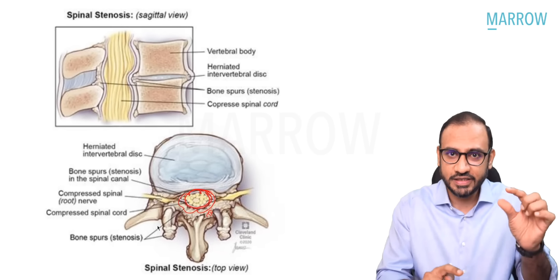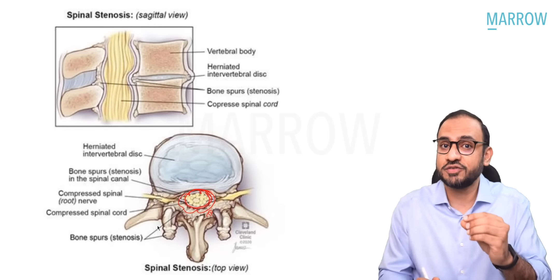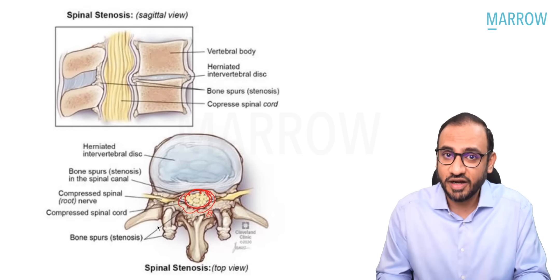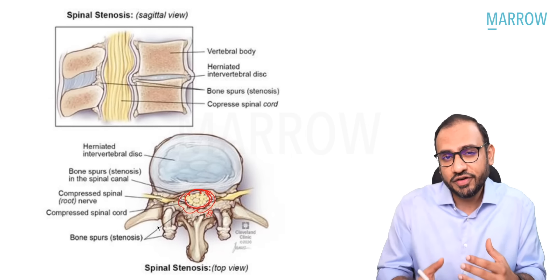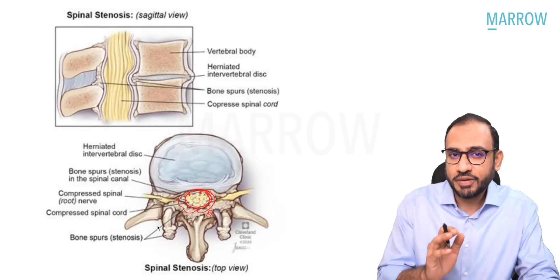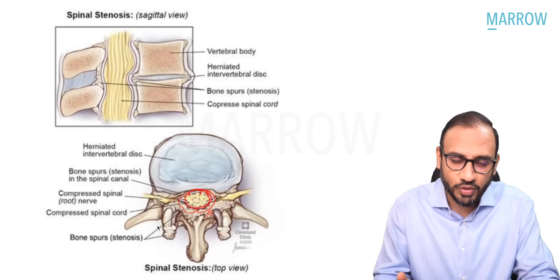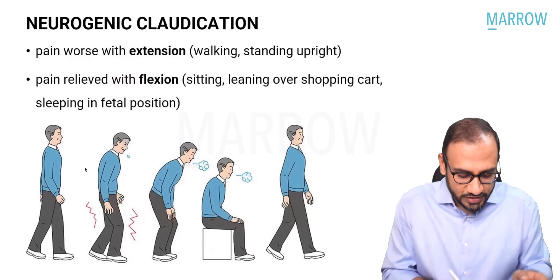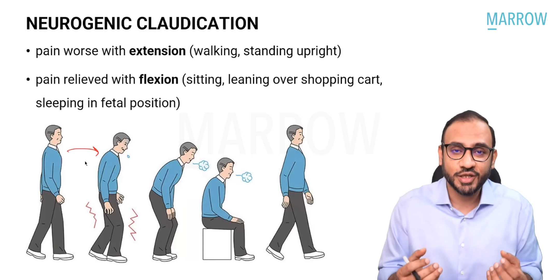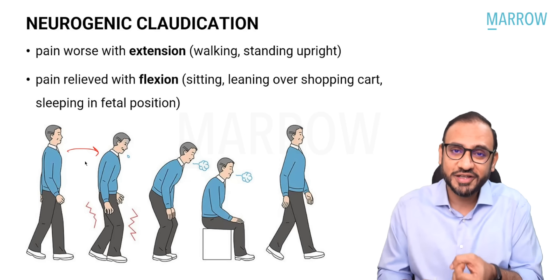This condition gives neurogenic claudication, usually seen in elderly people. The patient complains of pain particularly after walking a certain distance in an erect posture. After that, the patient stops and bends forward. When the spine bends forward, the space in the lumbar canal increases. When the spine goes into extension, the space narrows. Since the space is already narrowed, standing upright further narrows it and increases the pain.